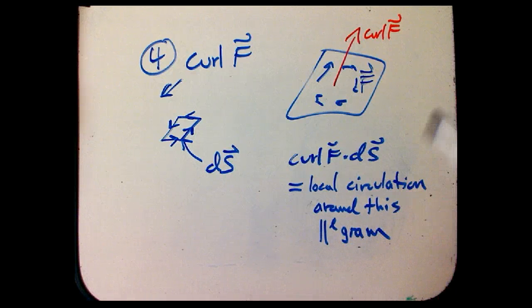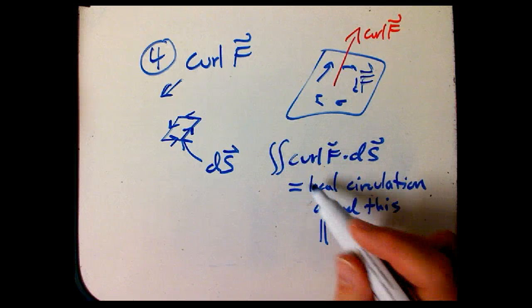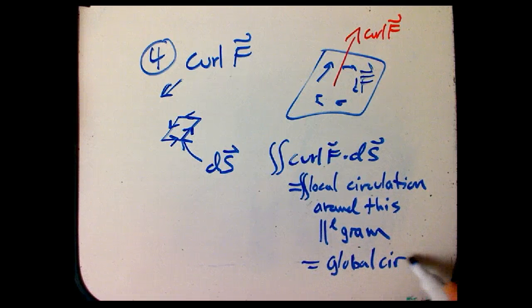And Stokes' theorem basically is just putting integrals in front of both sides of that. The integral of that is going to be the sum of all the local circulations, which is the global circulation. That's Stokes' theorem.